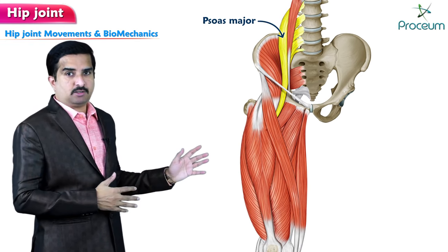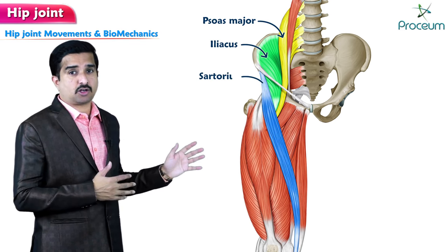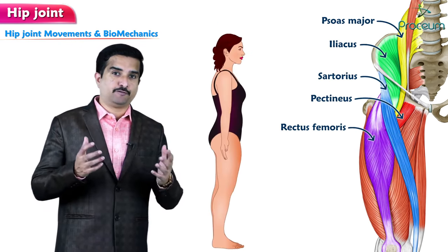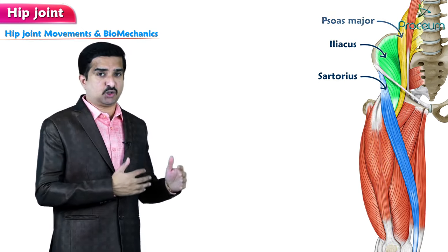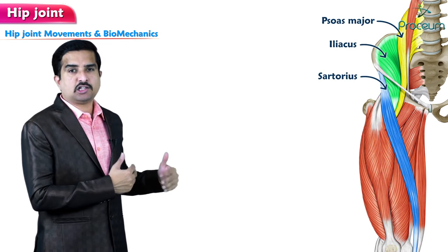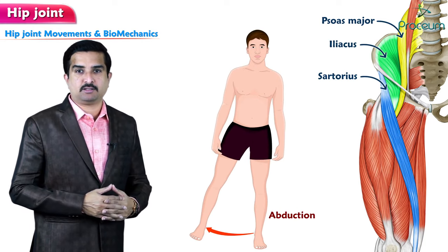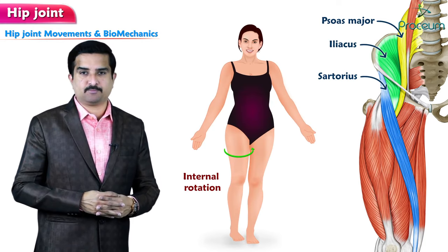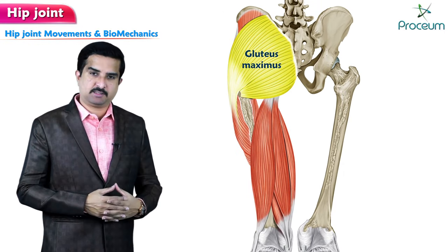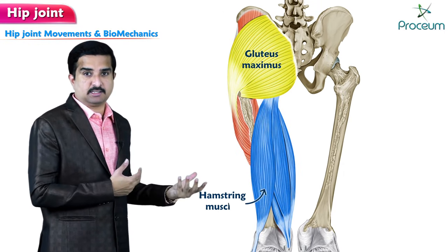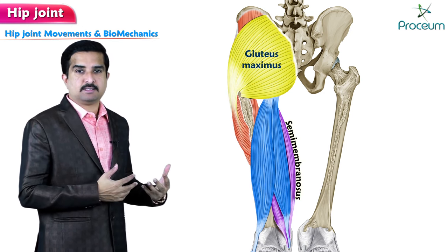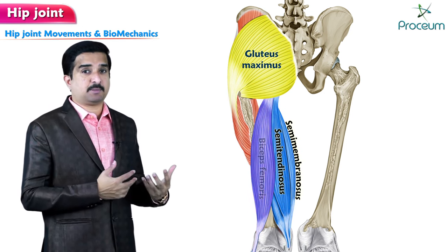The psoas major, iliacus, sartorius, rectus femoris, and pectineus allow for flexion. The psoas major, iliacus, and sartorius also aid in abduction as well as internal rotation. The gluteus maximus and the hamstring muscles — semimembranosus, semitendinosus, and biceps femoris — are the muscles responsible for extension of the hip joint.